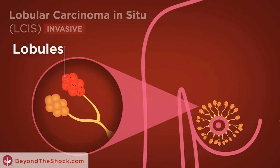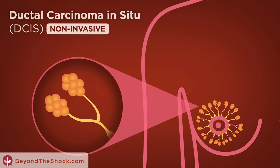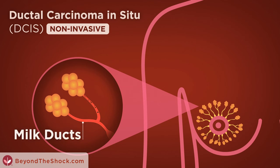Invasive lobular carcinoma is a type of cancer that develops and breaks through the lobules, with the potential to spread to other areas of the body. Ductal carcinoma in situ, DCIS, is a type of cancer that forms in the milk ducts and is considered non-invasive because it has not spread to any surrounding tissue.